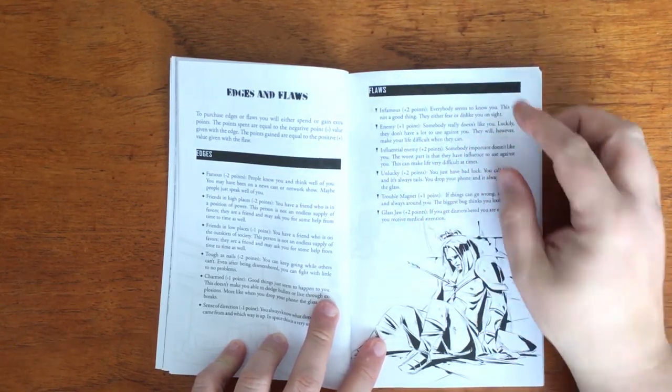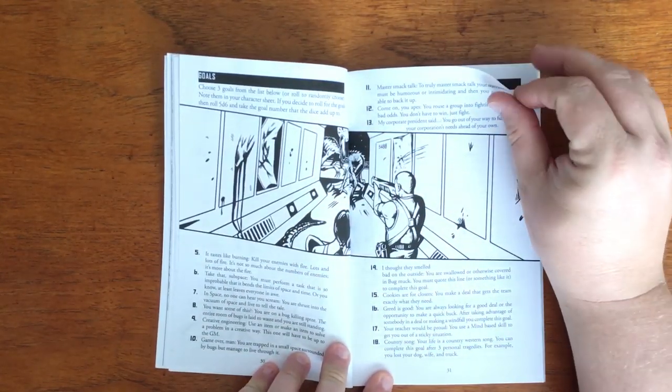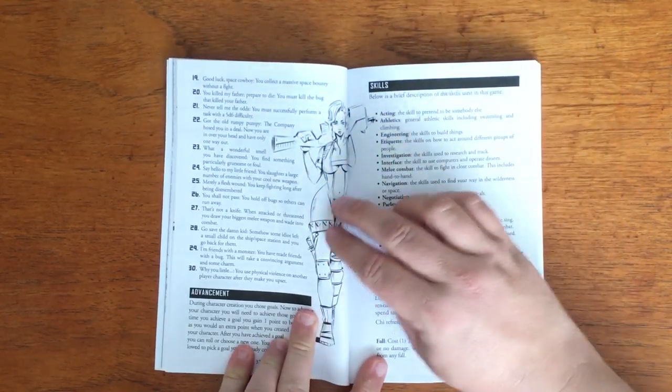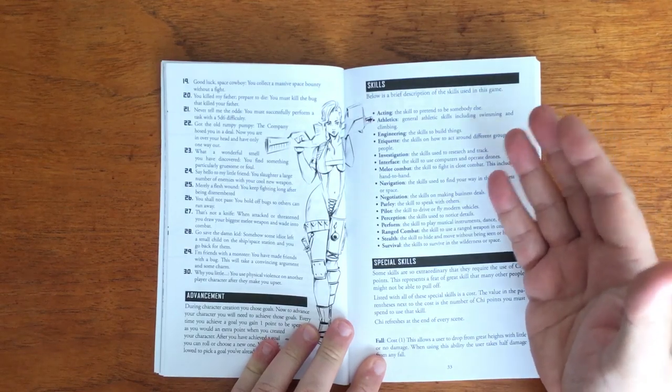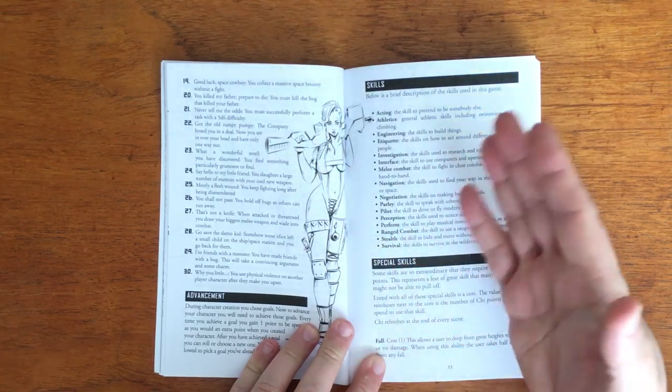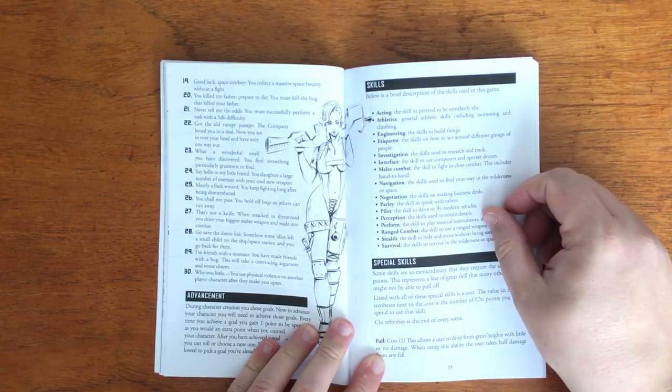Next up is Goals. Each character should roll 5d6 3 times and consult this table. This gives them goals. Whenever a goal is achieved, the character gains a point to spend on their character to advance them, although actual rules on the limitations on point spending eluded me. Most of them are pop culture references such as what a wonderful smell you've discovered or say hello to my little friend, so are fairly easy for players to understand.